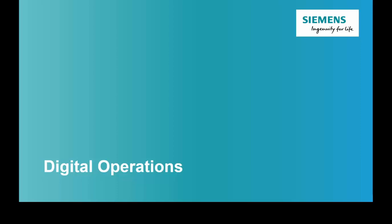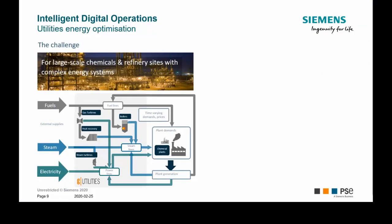Now I'd like to give some real examples of how this technology was used and what value was created. Here we see a utility plant. In typical utility systems, we have external supplies like fuels, steam, and electricity, and more equipment to deal with — like boilers, gas turbines to generate power, waste heat recovery, and steam used in the process. The process itself also generates energy, making it a really complex system.